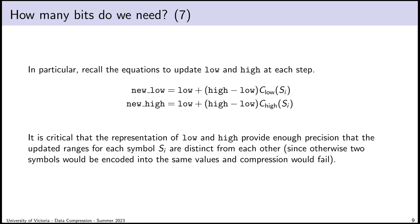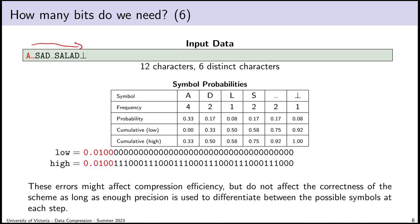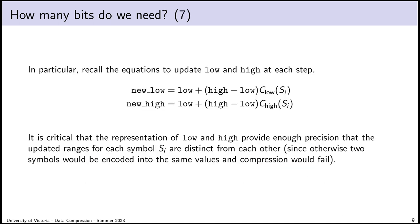We still have to choose a number of significant bits. If we want to choose the smallest number of bits possible, we can derive some logic for how many we need. Our goal is to avoid a correctness problem, so we need enough precision to differentiate between all possible symbols — enough space between low and high that we can divide up the interval among all possible symbols, so that no matter what the next symbol is, there will be enough space to represent the new range without new low equaling new high.